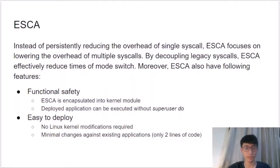Instead of persistently reducing the overhead of a single system call, ISCA focuses on lowering the overhead of multiple system calls by decoupling legacy system calls. ISCA effectively reduces the number of mode switches. ISCA is also functionally safe: we pack kernel modification into a kernel module which prevents applications not using ISCA from being affected, and applications with ISCA can run without superuser privileges. ISCA is also easy to deploy — it requires no kernel modification and only two lines of code changes against existing applications.